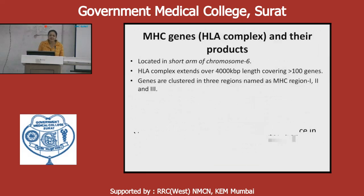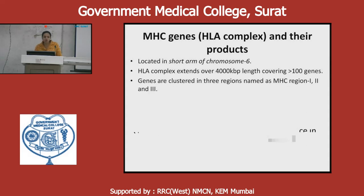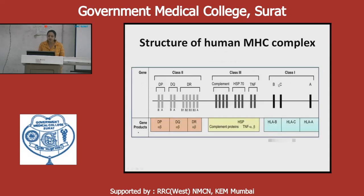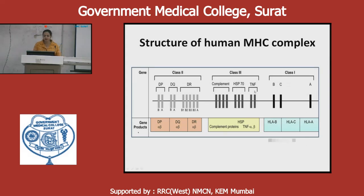The three regions of MHC genes are: Class 1, divided into HLA-A, B, and C; Class 2, divided into DP, DQ, and DR; and Class 3, mainly responsible for coding complement proteins, heat shock protein 70, and tumor necrosis factor. In the MHC class 1 molecule structure, there is an alpha chain with three parts — alpha 1, alpha 2, alpha 3 — and beta-2 microglobulin. Alpha 3 binds with CD8 via the cytoplasmic tail anchored in the cell membrane. The peptide binding groove is formed between alpha 1 and alpha 2.